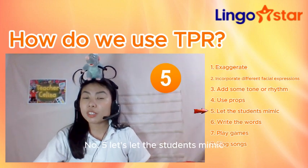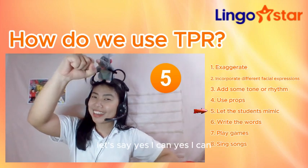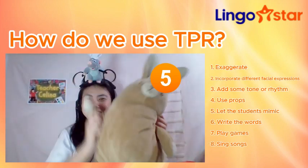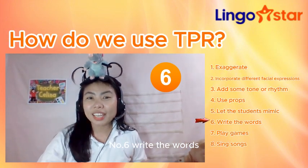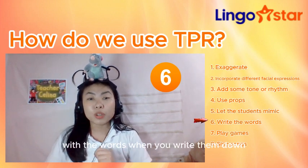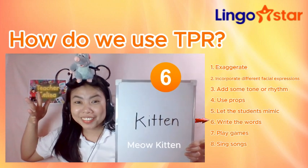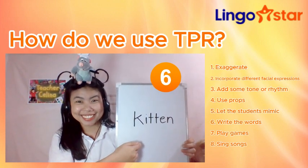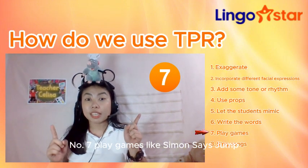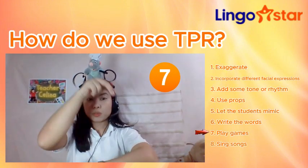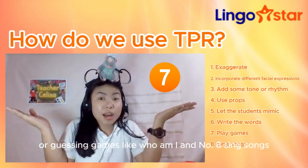Number five, let the students mimic. Let's say, "Yes, I can!" Number six, write the words — it gets them to associate the written text with the words when you write them down. Number seven, play games, like Simon Says: "Jump!" Or guessing games like, "Arf, arf, arf — who am I?"